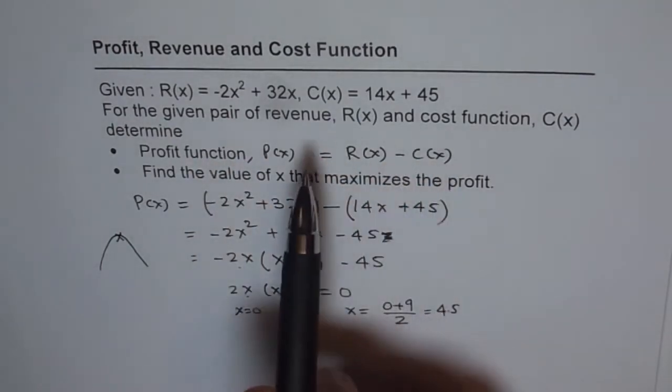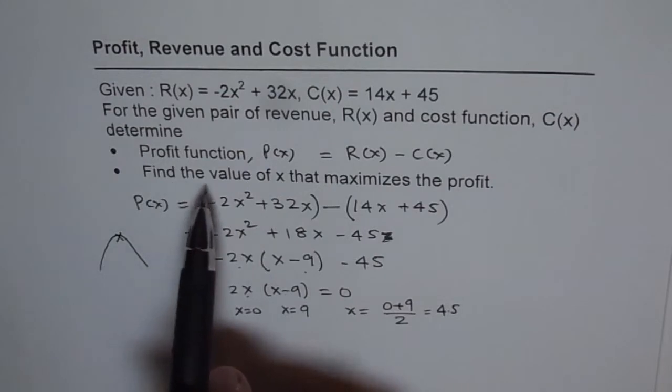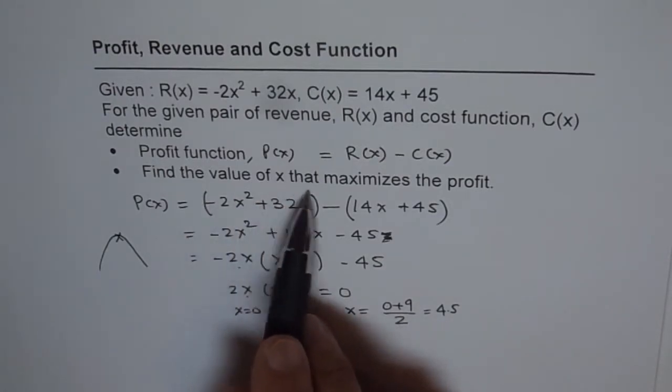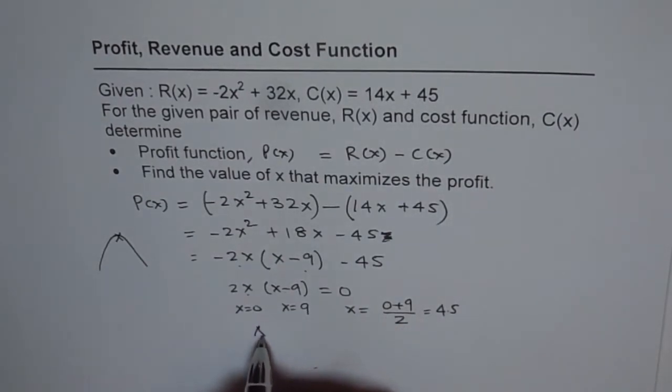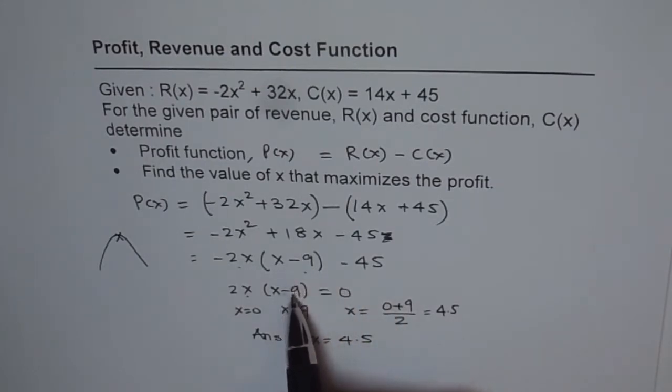Now, in this question, we are not given units of x. Find the value of x that maximizes the profit. At times, it may be written in thousands of numbers or something like that, but in this case, it has not been specified. And therefore, we will write, find the value of x that maximizes the profit. The value of x is 4.5, which is going to maximize the profit, and therefore, our answer is x equals to 4.5.